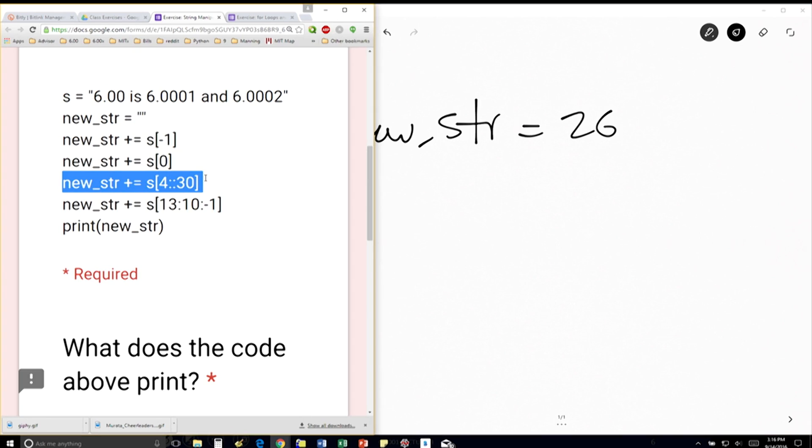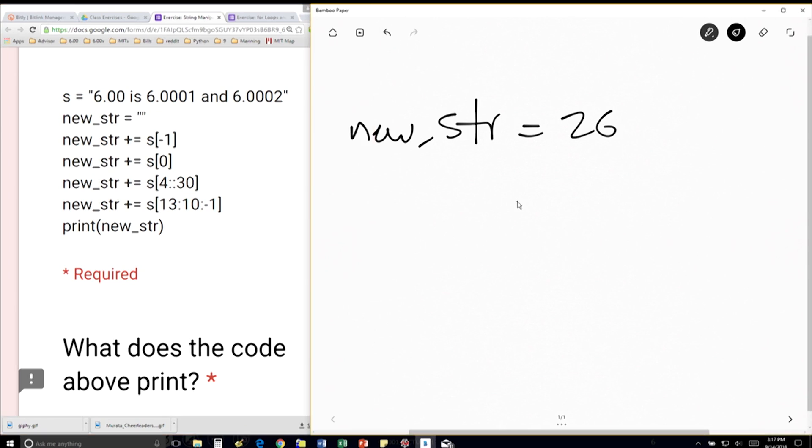Then I'm going to add to that the element at index 4. So I'm starting to count from 0. So this is 0, 1, 2, 3, 4. So that's a space. And I'm going to go, notice I have 4 and then nothing in the middle. So my stop is going to be length s by default. And I'm going to take every 30 characters. Now every 30 is longer than the actual string I have, right? So we're just going to end at the end of the string. So the next thing that we're going to add is a space.